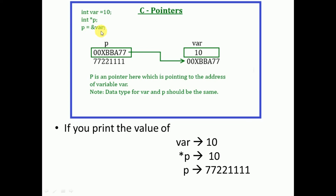When you write &var, the address of var — which is 0x00bba77 — is assigned to p. So when you declare int var, a block of memory is allocated labeled var with value 10, and it has some address. Similarly, when you declare a pointer variable p, a block of memory is also allocated labeled p. But what is stored in p is not the direct value — it is the address of the variable var, an indirect value.